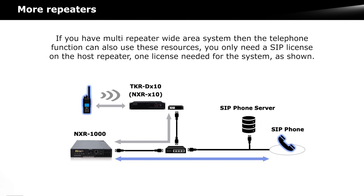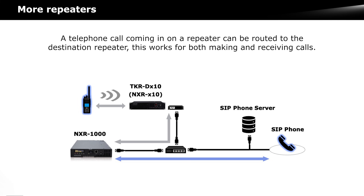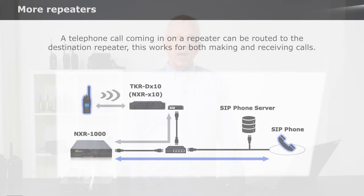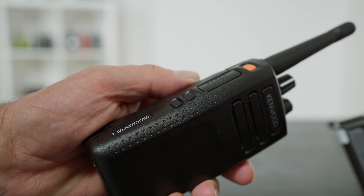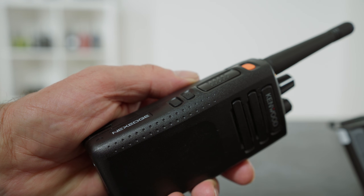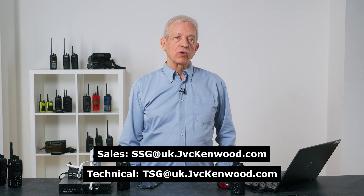You only need a SIP license for the host repeater — only one license is needed for the system. A telephone call coming in from a repeater can be routed to a destination SIP repeater, and this works for both making and receiving calls. Adding telephone services to a new or existing radio system is a real way to add value for end users — it's a feature that just about every end user is going to want, whether they use it a few times a week or many times a day. All types of radio can both make and receive calls, but radios without a keypad or display are more limited in the number of different calls they can make. For more information on how to put together your own demo system, please contact Kenwood.